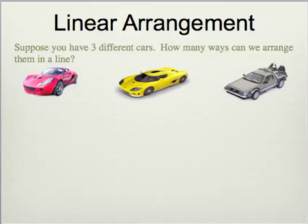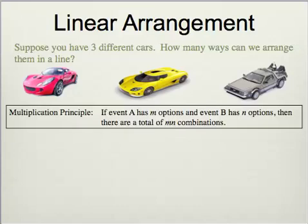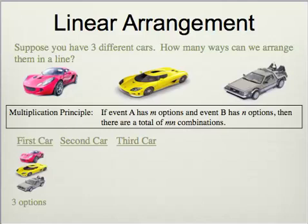Looking at those, don't forget the multiplication principle from the last video: if event A has M options and event B has N options, then there are a total of M times N combinations. It's a little different here because you have to choose from your cars. We're going to have three cars, so you have a first, second, and third car. The number of options for the first car is three — the red, yellow, and gray car.